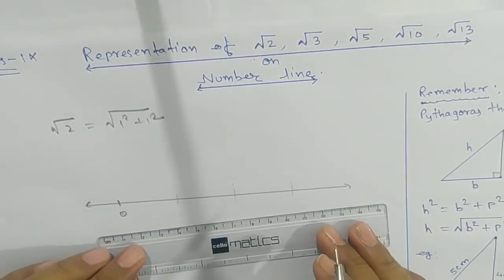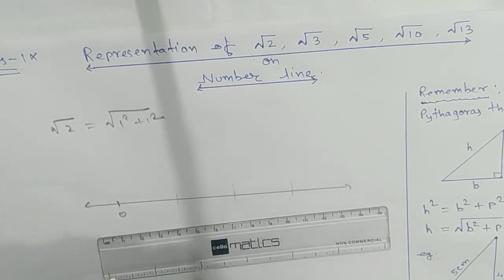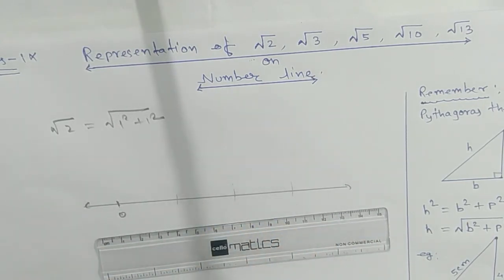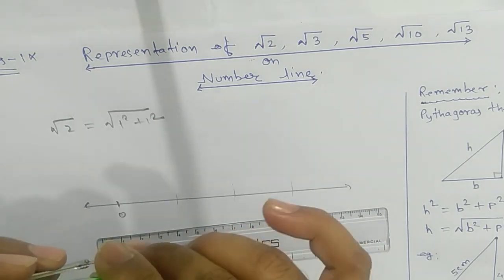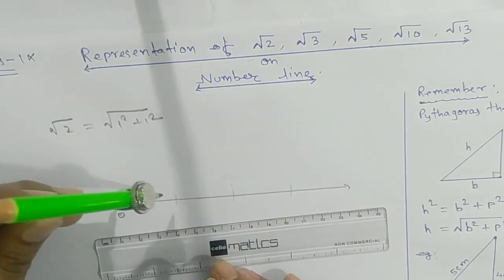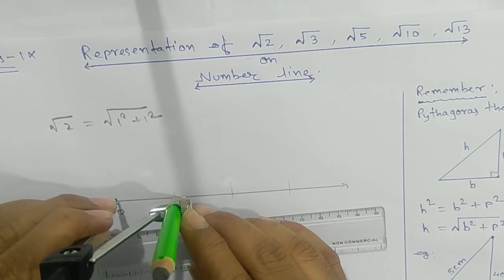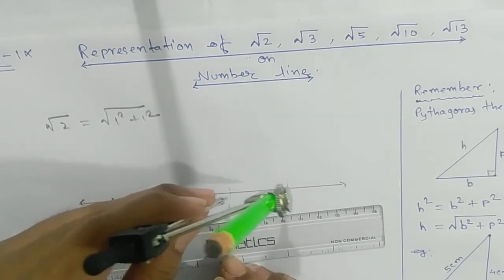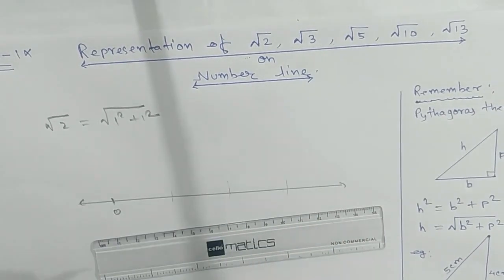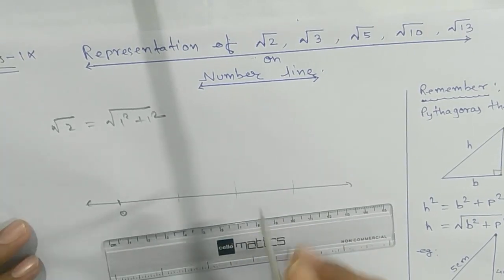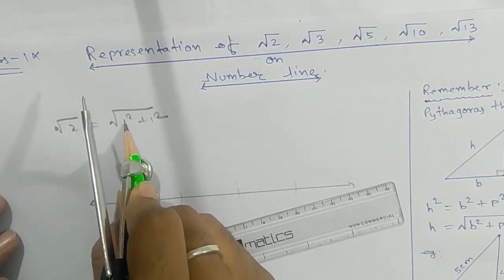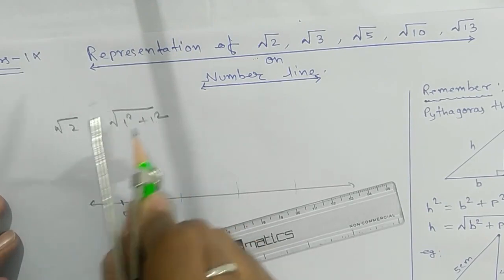After that, take an arc of your own chosen length — whatever length you take, it will become a constant. We are taking this one. Take your own length: 1, 2, 3. Root 2 can be represented as 1 square plus 1 square.